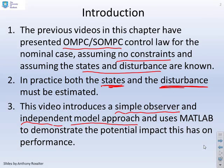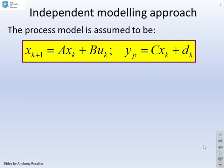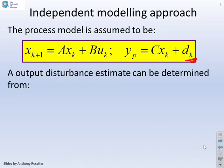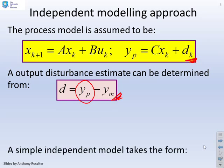The key thing is: how does performance change when you need to estimate both the states and the disturbances rather than assuming they are known? Let's look at the independent modelling approach. The process model is assumed to be x = Ax + Bu and y = Cx plus some output disturbance model. An output disturbance estimate can be determined by measuring the process and comparing it to a model.